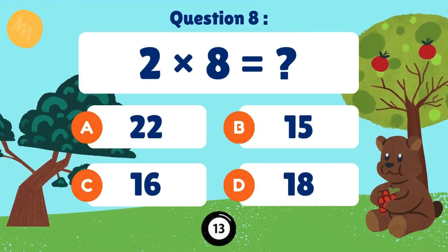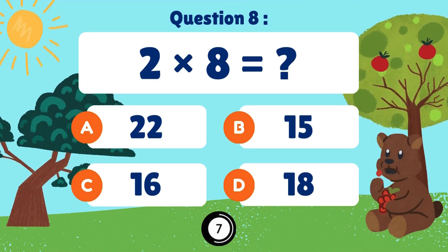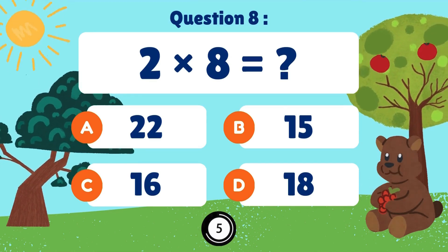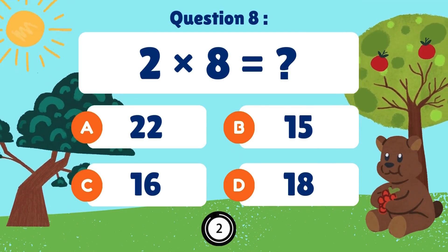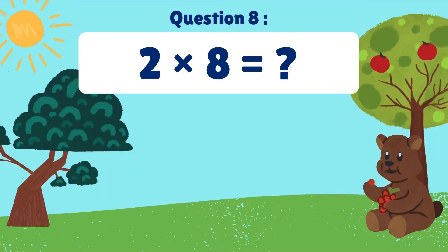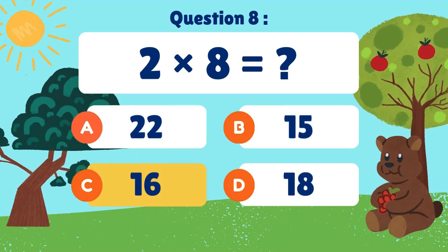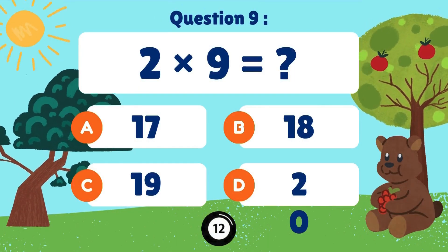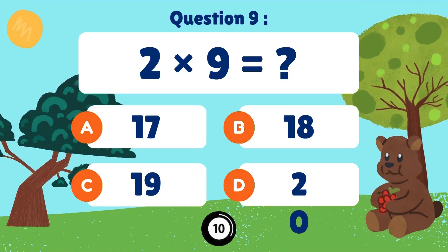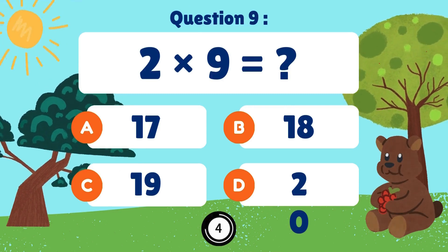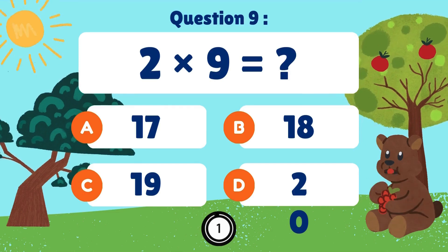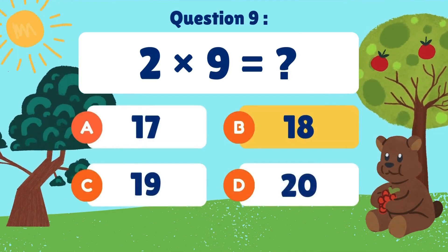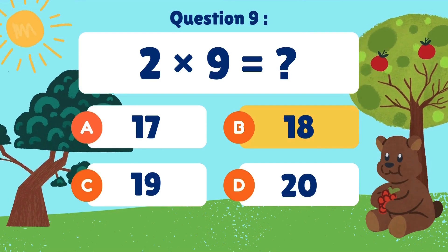Two times eight. Two times eight equals sixteen. Two times nine. Two times nine equals eighteen.